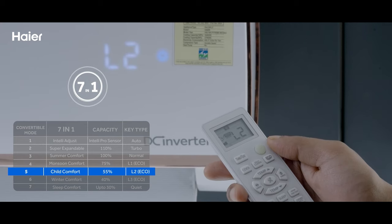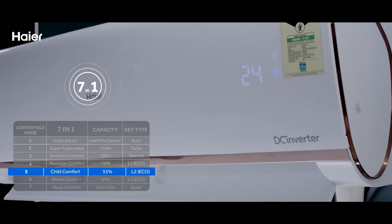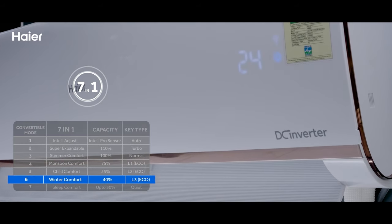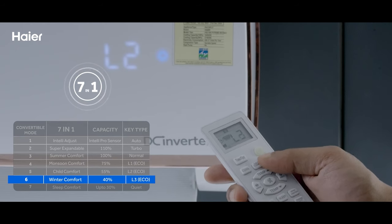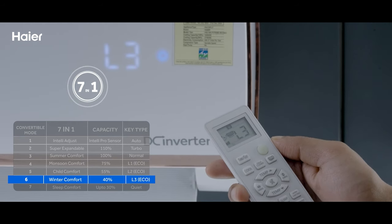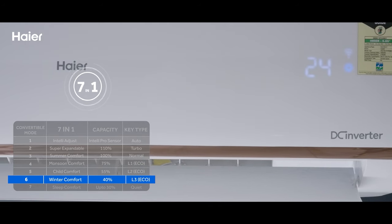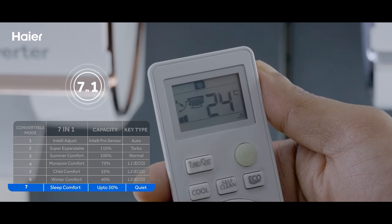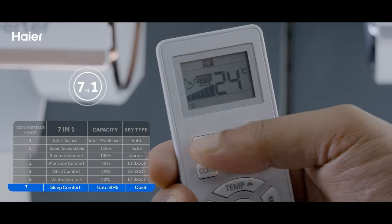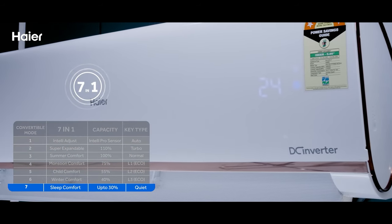Option 6: use winter comfort mode by pressing the eco key thrice. It will show L3 on the display and AC will run at 40% capacity. And finally, option 7: use super quiet mode by pressing the quiet key as AC runs at optimum capacity while remaining most silent.